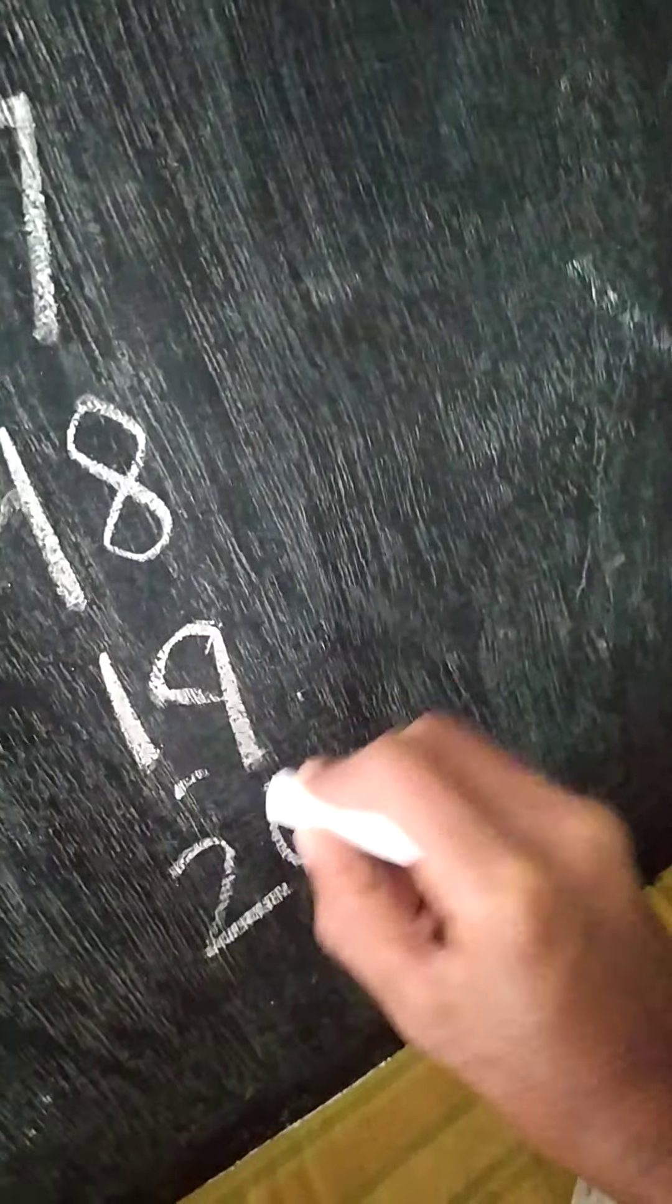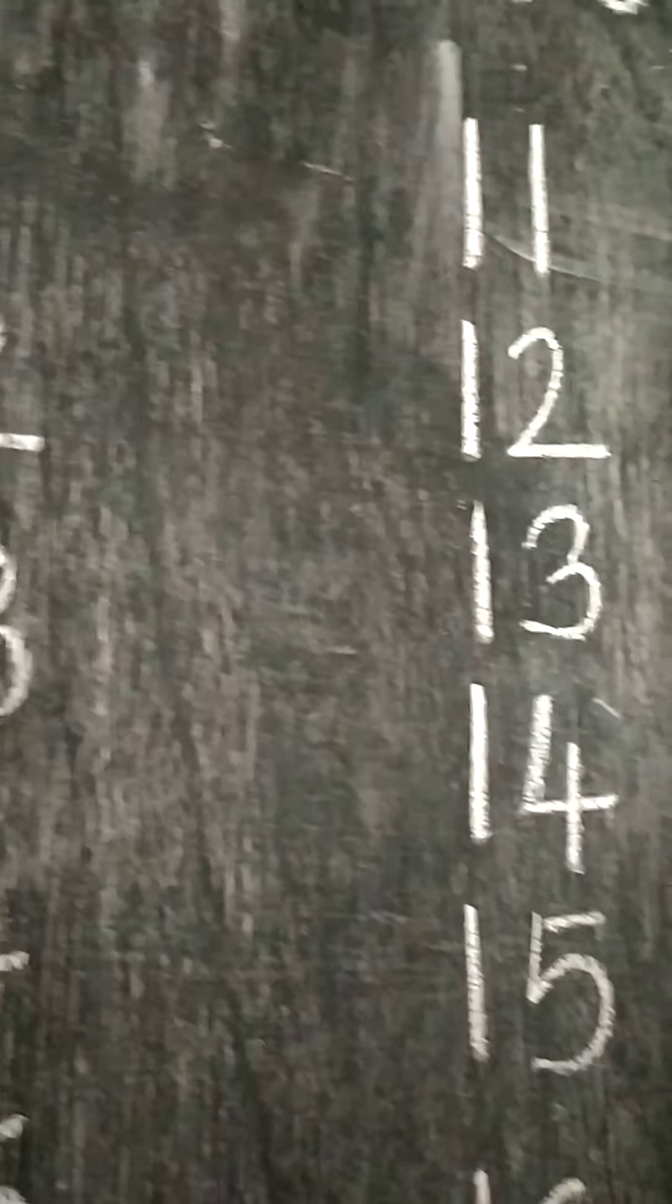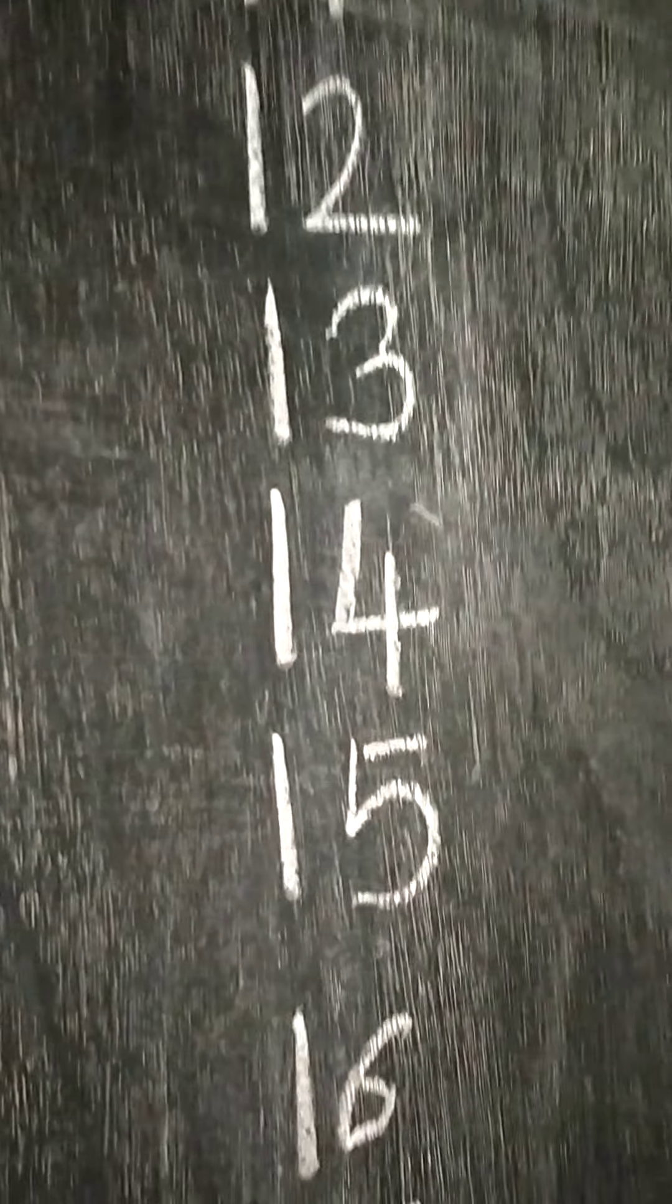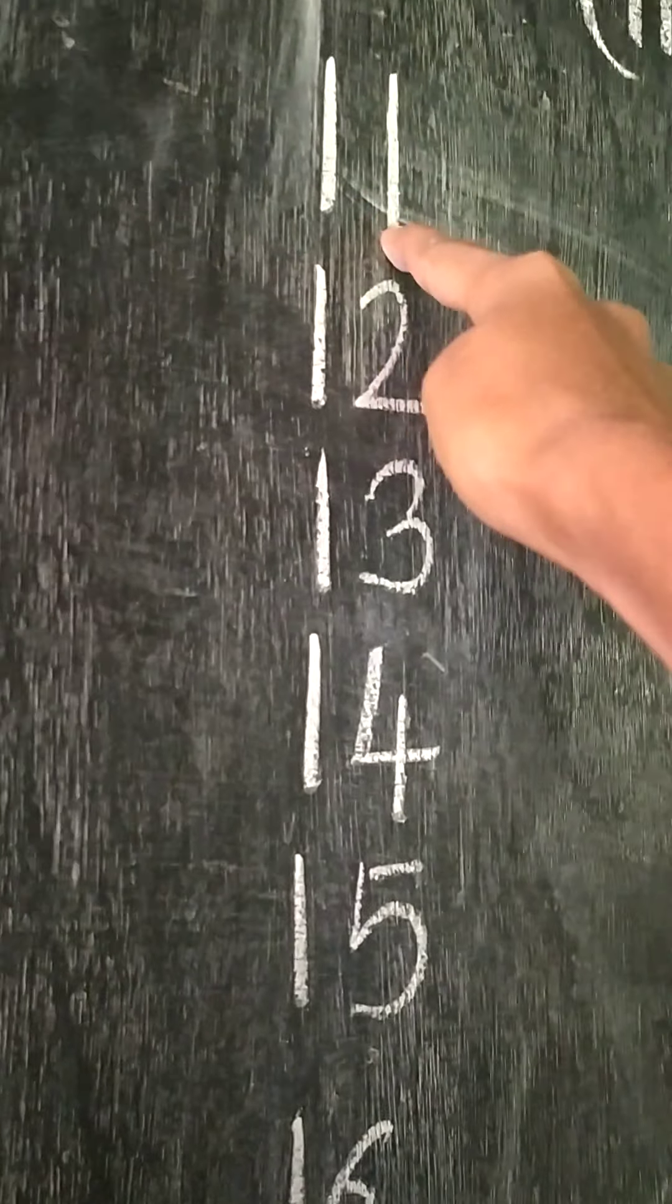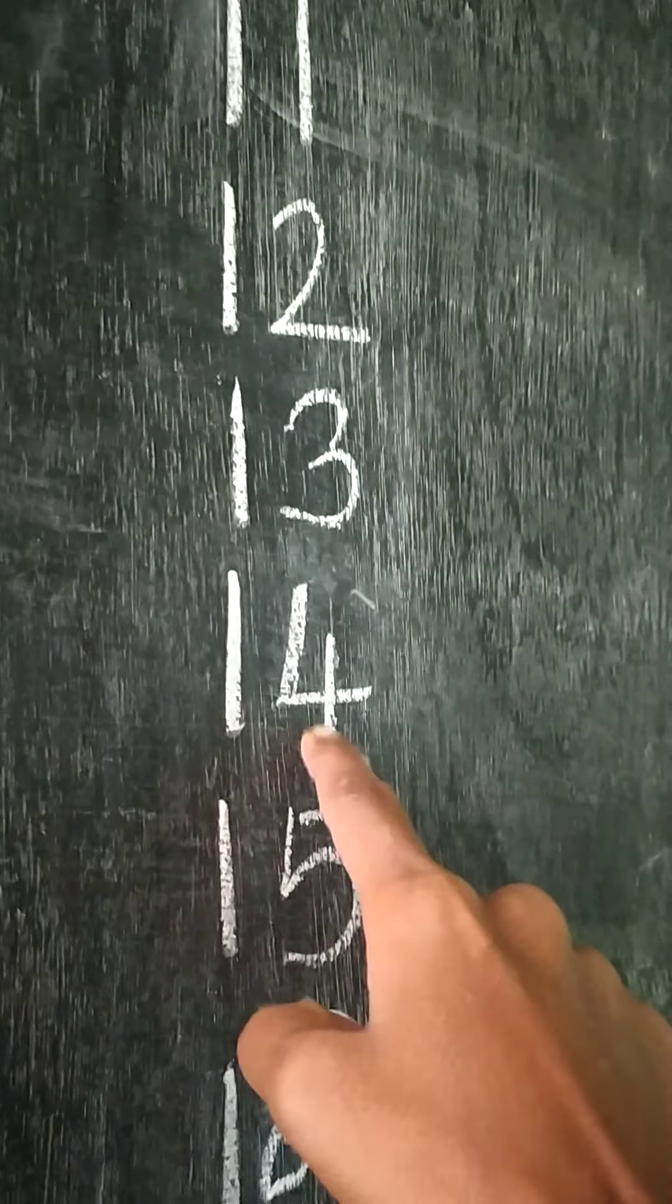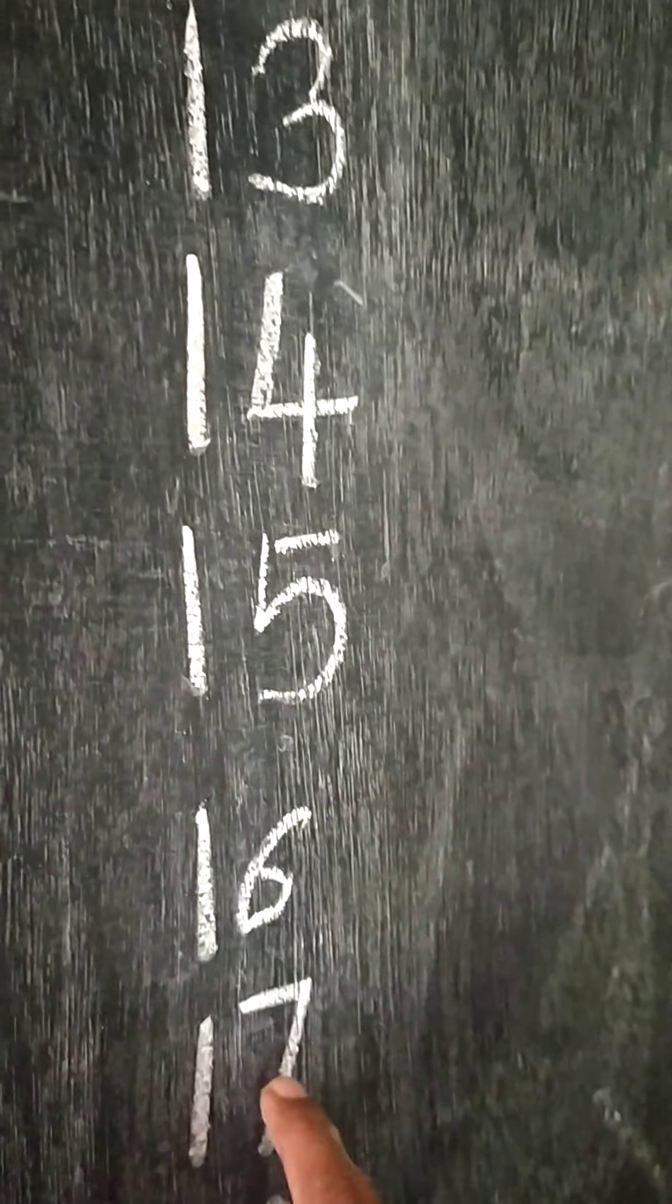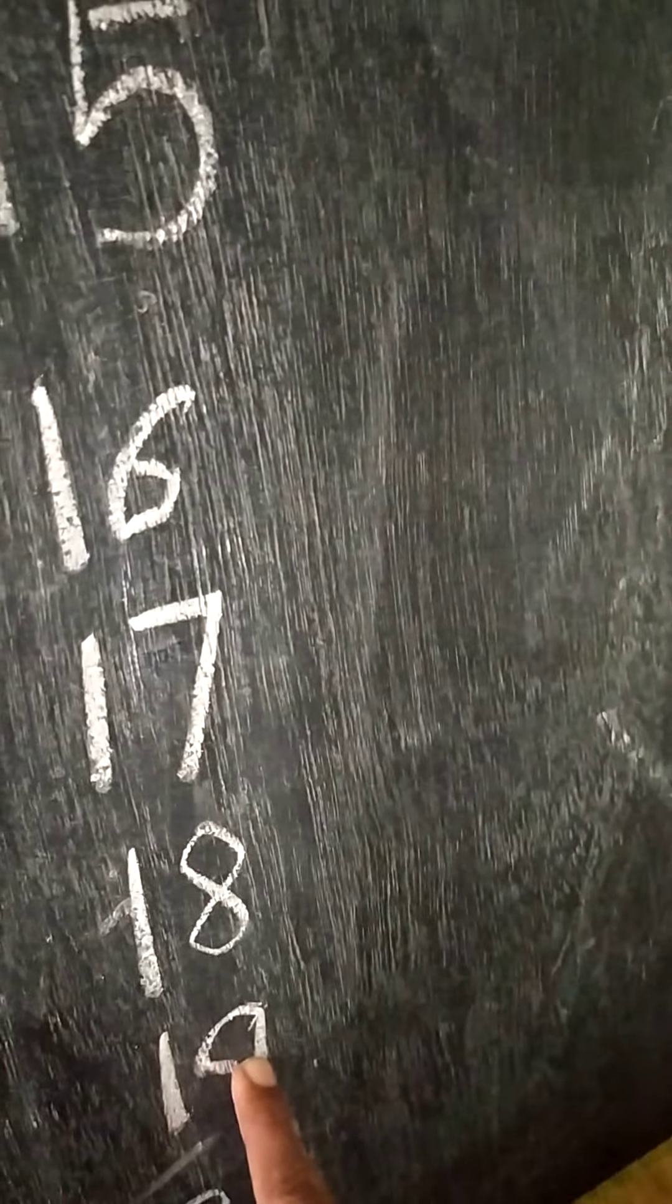20. And then you try to write 11 to 20, write like this: 1, 1, 11. 1, 2, 12. 1, 3, 13. 1, 4, 14. 1, 5, 15. 1, 6, 16. 1, 7, 17. 1, 8, 18. 1, 9, 19.